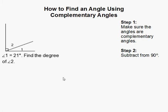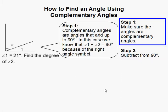How to find an angle using complementary angles. The first thing we need to do is make sure that the angles are in fact complementary. And complementary angles are angles that add up to 90 degrees.